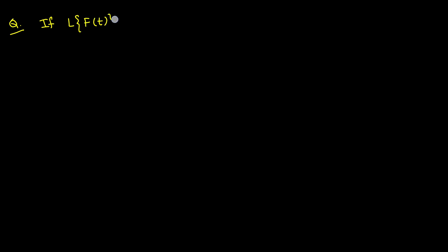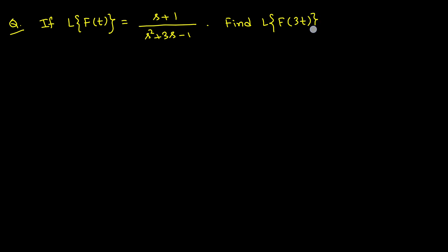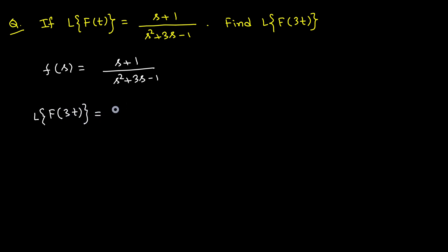Problem: Given L{f(t)} = (s+1)/(s²+3s−1), find L{f(3t)}. Here F(s) = (s+1)/(s²+3s−1). Using the scale property: L{f(3t)} = (1/3) F(s/3).